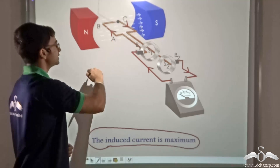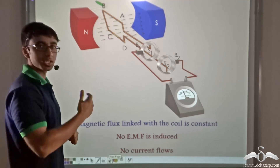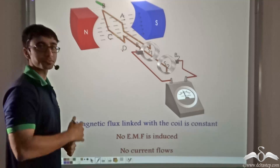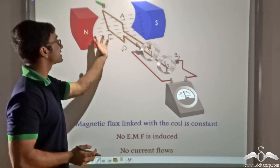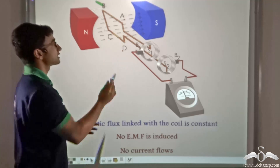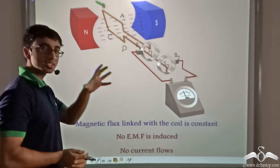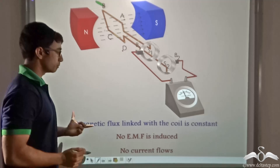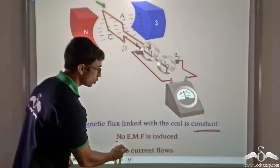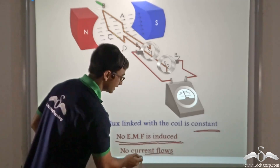When the coil is further rotated in the clockwise direction, a point comes when the coil reaches the position where arm AB is on top and arm CD is at the bottom — unlike where we began, where AB was at the bottom and CD was at the top. The coil has reached the configuration where it is perpendicular to the magnetic field lines, and all six magnetic field lines are passing through the coil again. So the magnetic flux linked with the coil becomes constant — the same as it was initially. No EMF is induced because there is no rate of change of magnetic flux, and since there is no EMF, no current flows, as seen from the galvanometer needle which is not deflected.